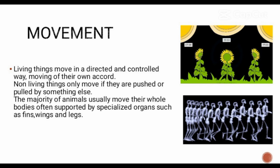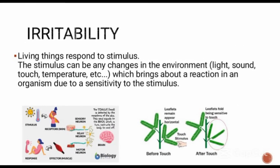Movement mainly takes place inside the cell, although some results from a stimulant. The next one is irritability. Living things respond to stimulants. The stimulants can be any change in the environment, like sound, touch, temperature, etc., which bring about a reaction in an organism due to sensitivity to the stimulants.